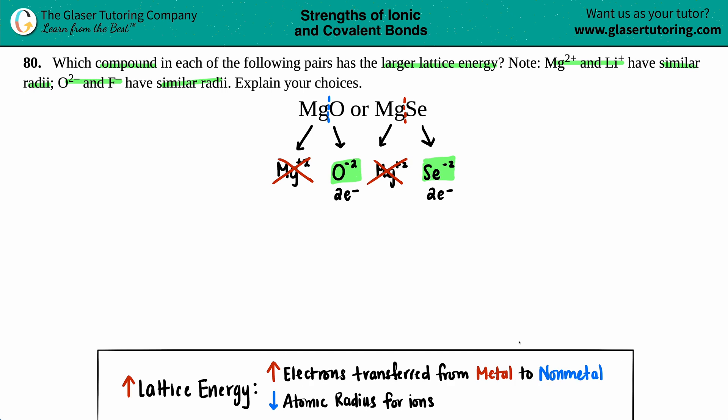The last thing is we need to know which one has a bigger or smaller atomic radius. The atomic radius trend says that as you go from left to right, you are decreasing the size of your atom, and as you go from top to bottom, you are increasing.